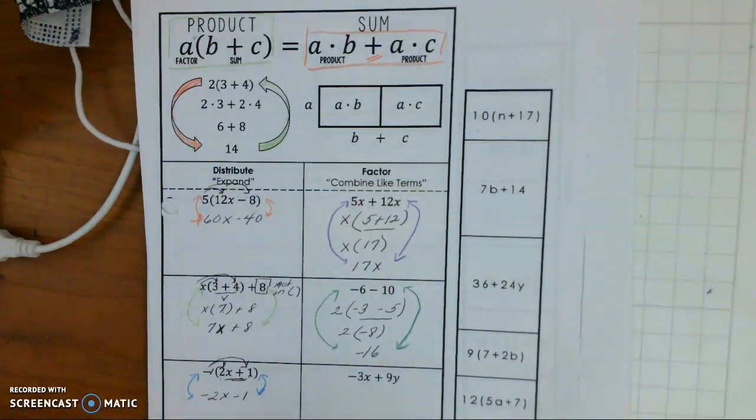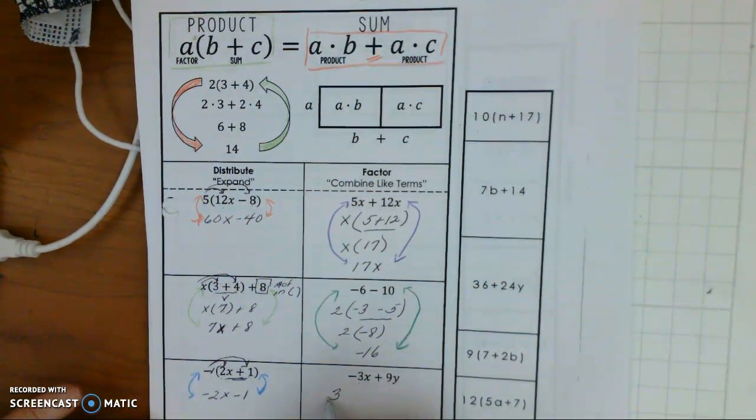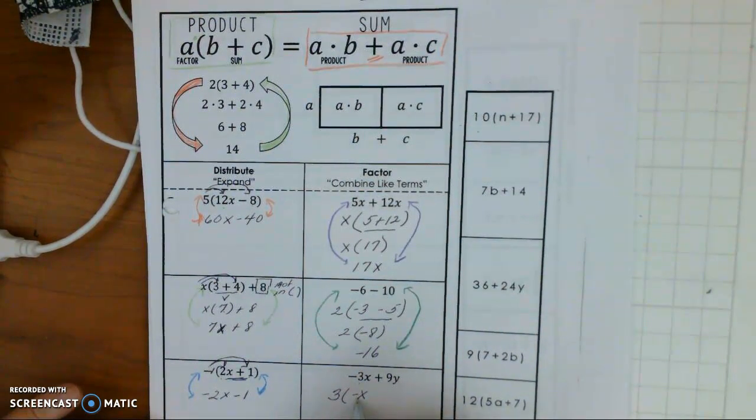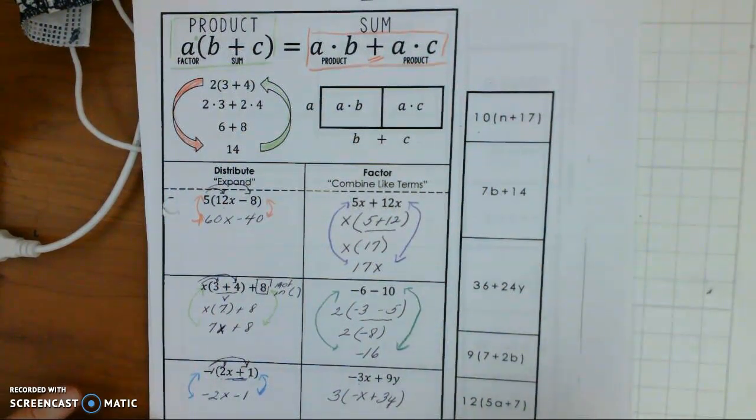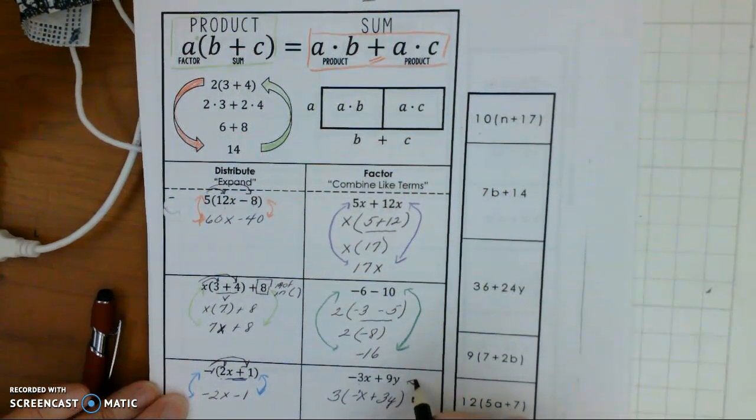Now, the next one, the greatest common factor here that we can use is 3. So if we multiply 3 times negative x plus 3y. So that way, we know that if we multiply, this is considered a 1 in here. So 3 times negative 1 is 3x. 3 times 3 is 9. So it's 3y. So again, we have another set of equivalent fractions.